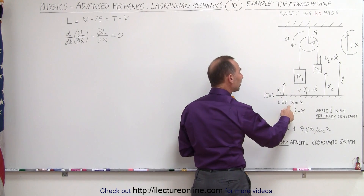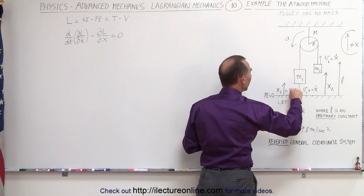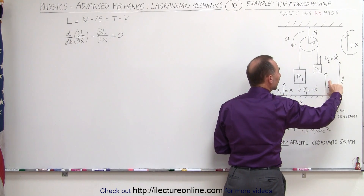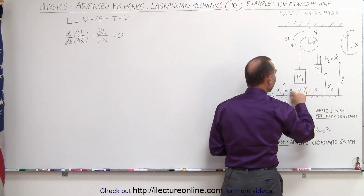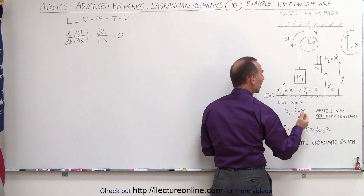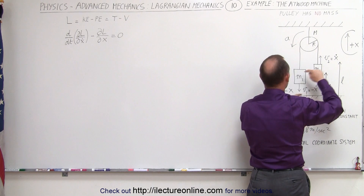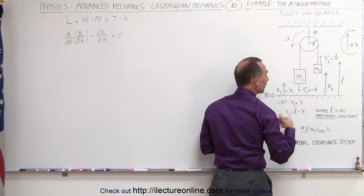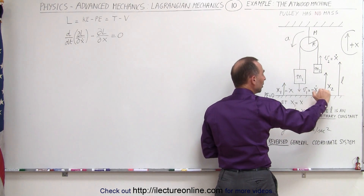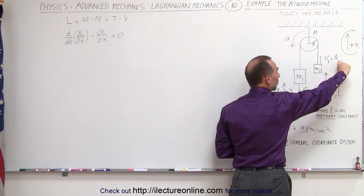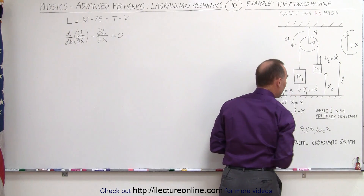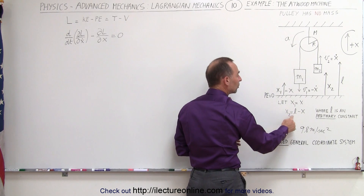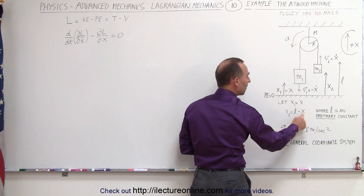We can still call x1 equal to x. And if we take some arbitrary constant L, then x2 can be expressed as L minus x, because if we subtract x from L we get x2. Notice as x gets smaller, x2 gets larger — we subtract a smaller and smaller number, and you can see that does match. So we can use the transformation: x1 equals x, and x2 equals some arbitrary constant minus x.